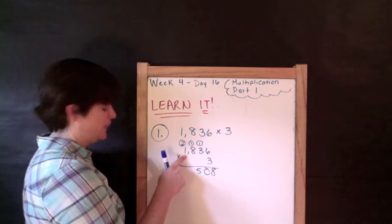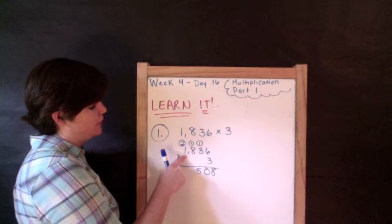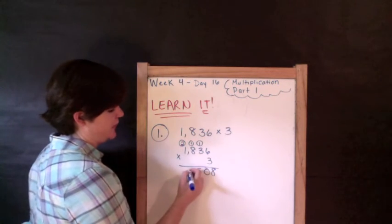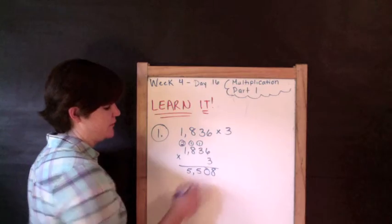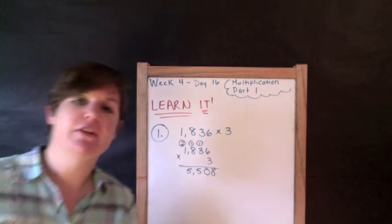3 times 1 is 3. 3 plus 2 is 5. Ones, tens, hundreds, comma. So 5,508 would be your answer.